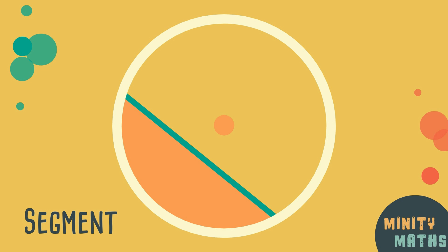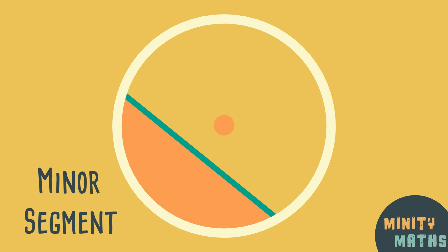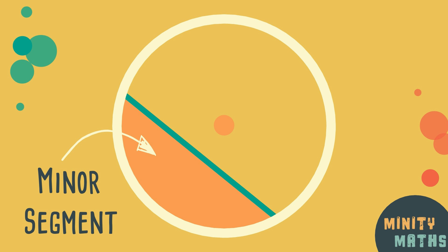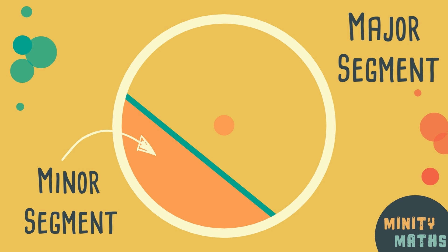If the segment is smaller than a semicircle, it is a minor segment. If it is bigger than a semicircle, it is called a major segment.